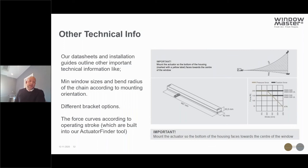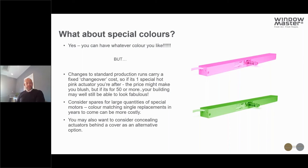There's lots of other technical information available. Our data sheets and installation guides are a really good starting point, outlining things like minimum window sizes, the bend radius of chains according to orientation, a whole host of bracket arrangements for different window profiles, and the force capabilities of each motor. Where there is a specific force curve for those actuators, that will be detailed too.